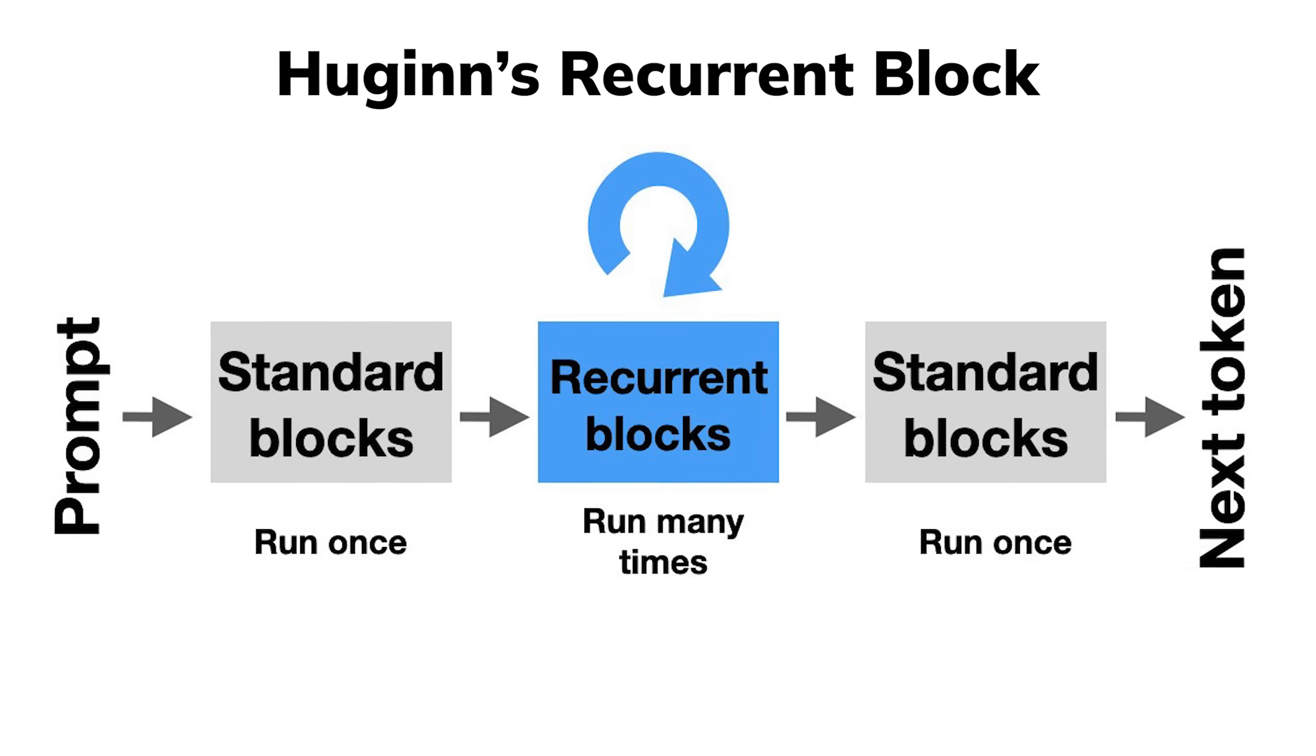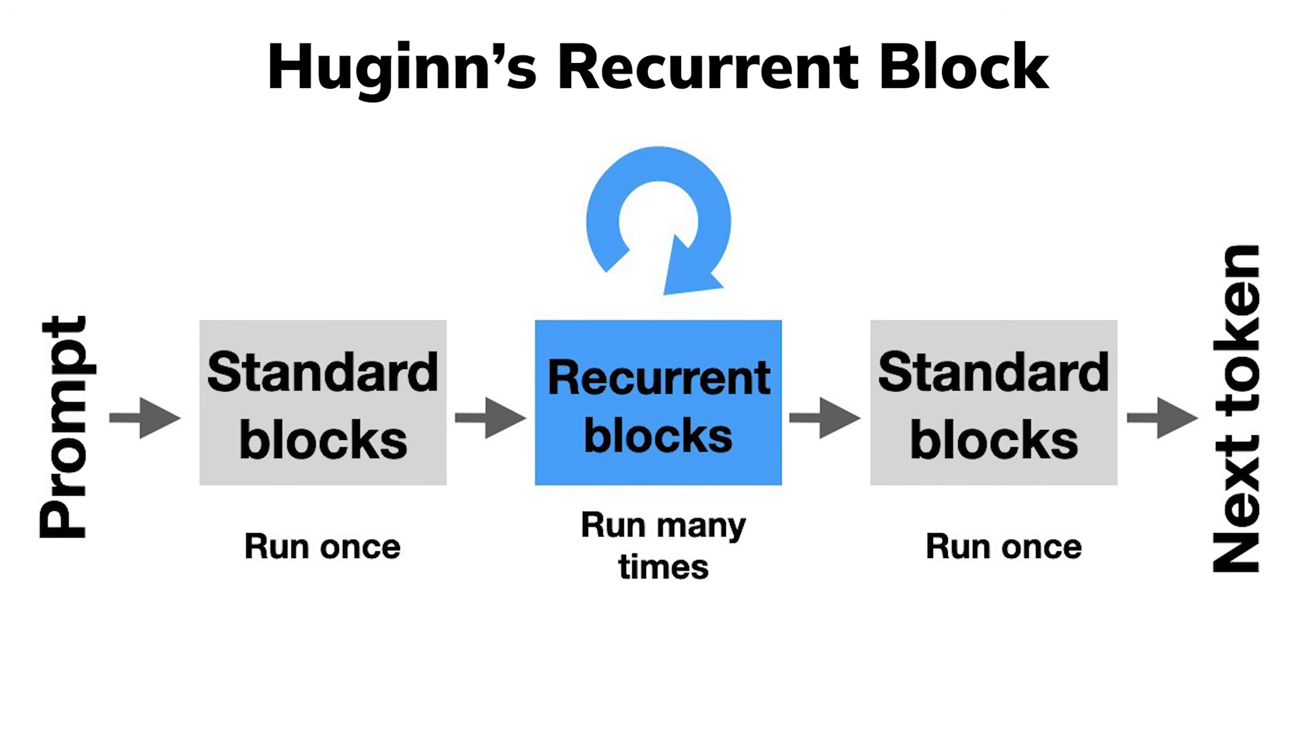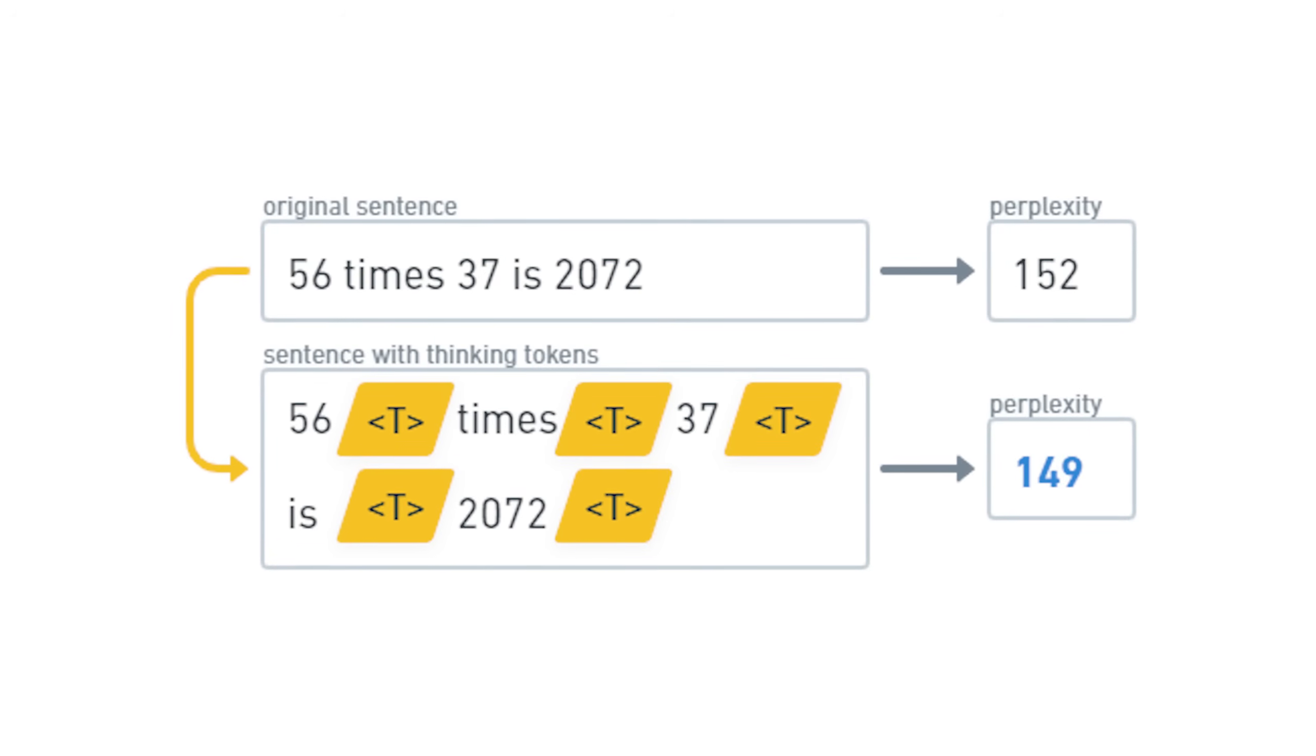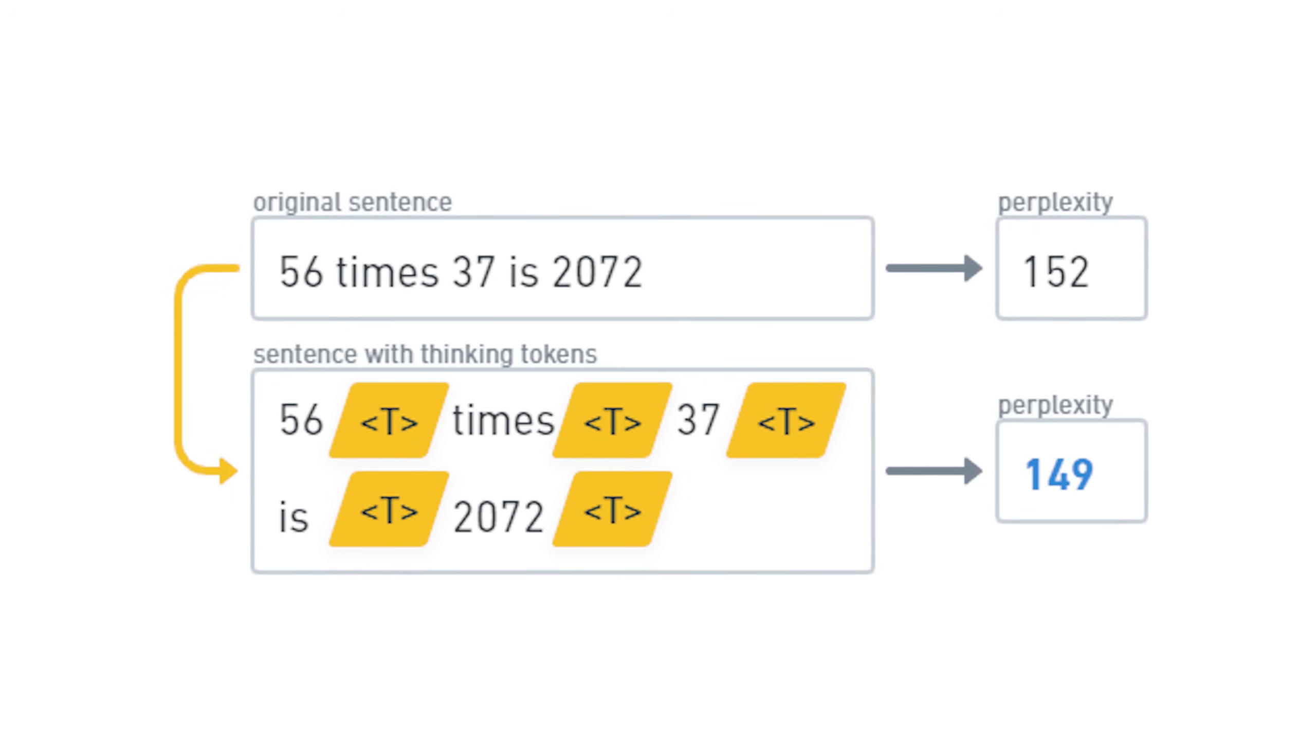Last time, we looked at Hugin where we have a thinking block that LLM can just repeat to simulate thinking and completely remove the need to generate thinking tokens.